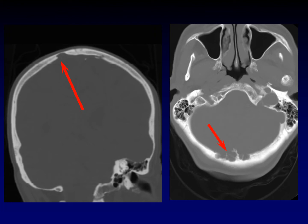These are both benign lesions. This one is a venous lake — it's just an expanded vein in the skull itself that has extended across the cortical surface of the inner table of the skull. This one is an enlarged arachnoid granulation. So how can we tell them apart?